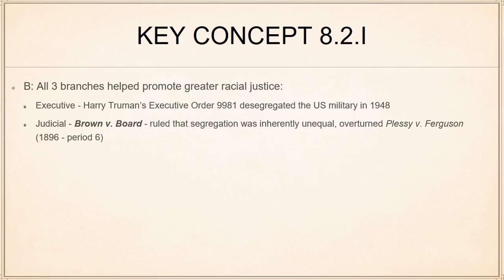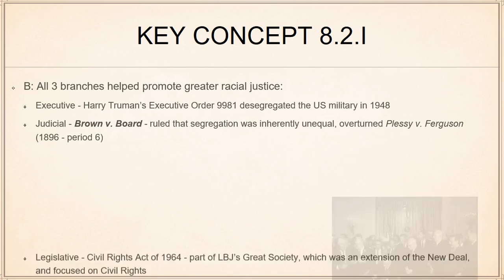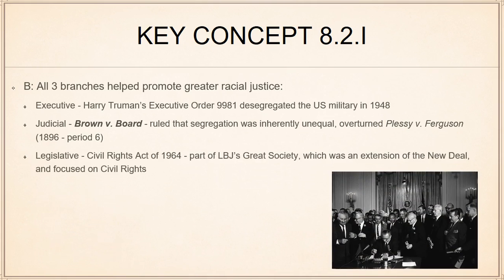Brown v. Board of Education at Topeka, Kansas ruled that segregation in public schools was inherently unequal. Just because it was aimed at public schools doesn't mean people didn't understand the ramifications — if segregation was inherently unequal in public school, it was inherently unequal everywhere. Brown v. Board in 1954 is what overturns Plessy v. Ferguson, under which separate but equal was fine as far as the United States government was concerned.